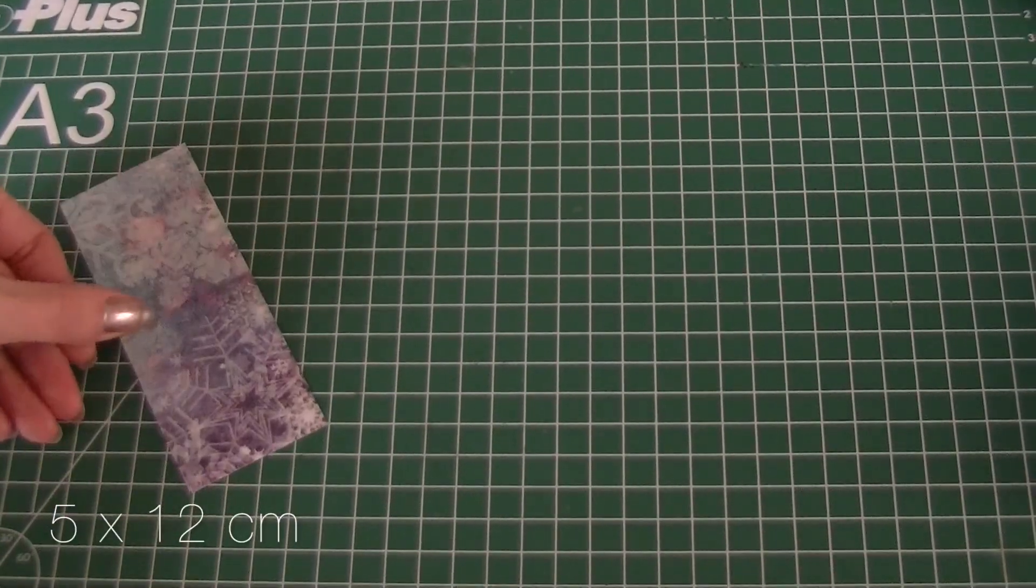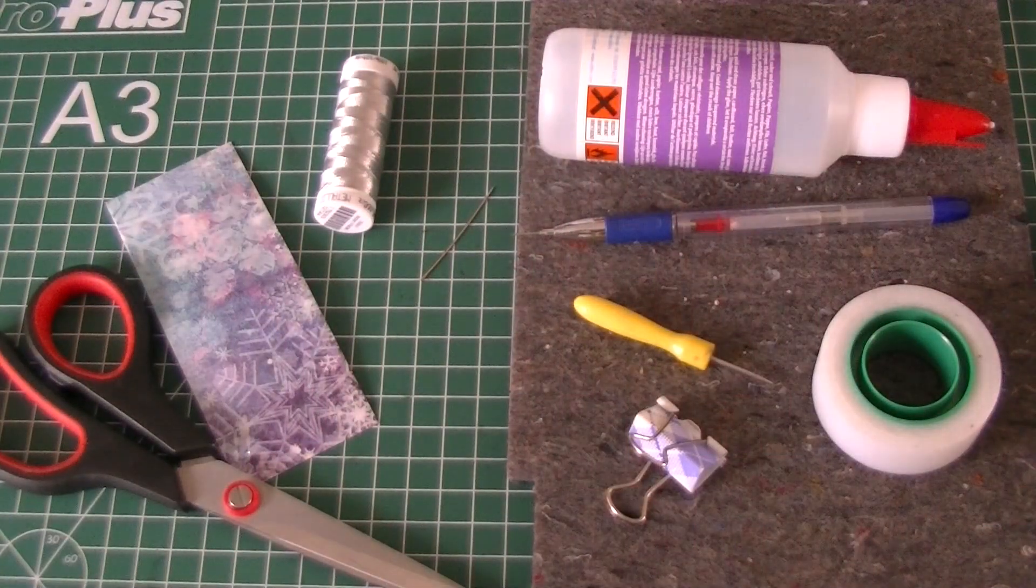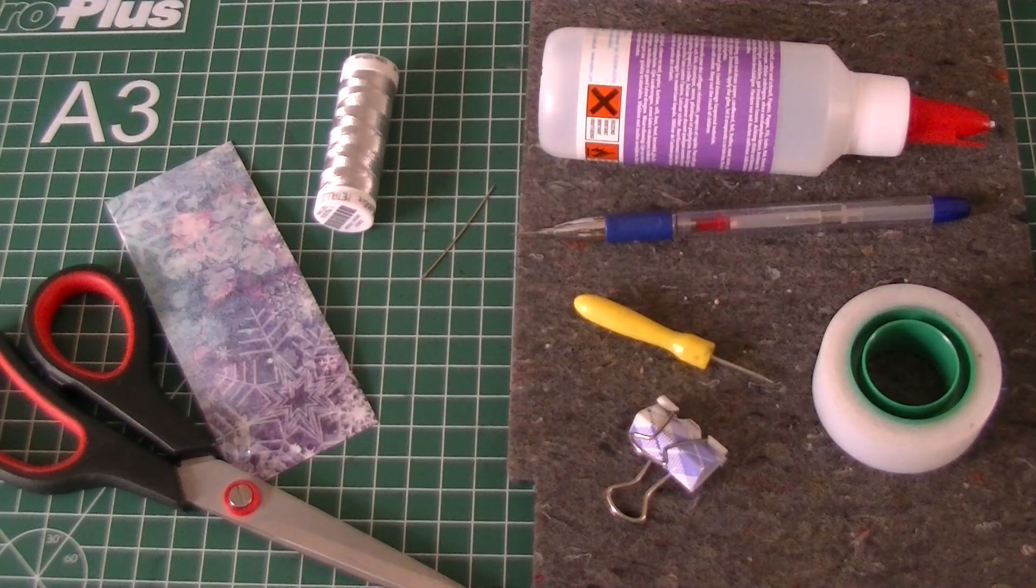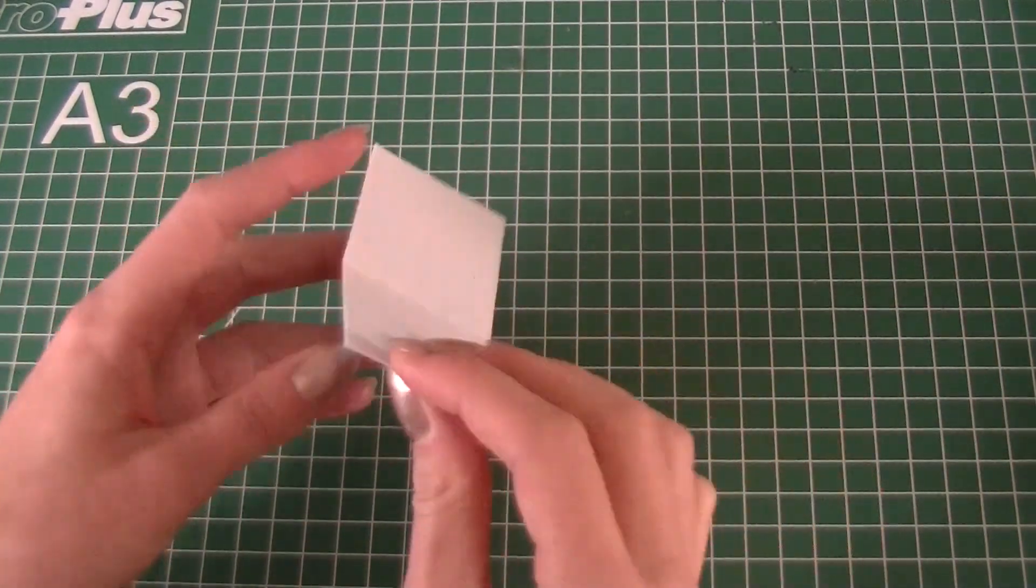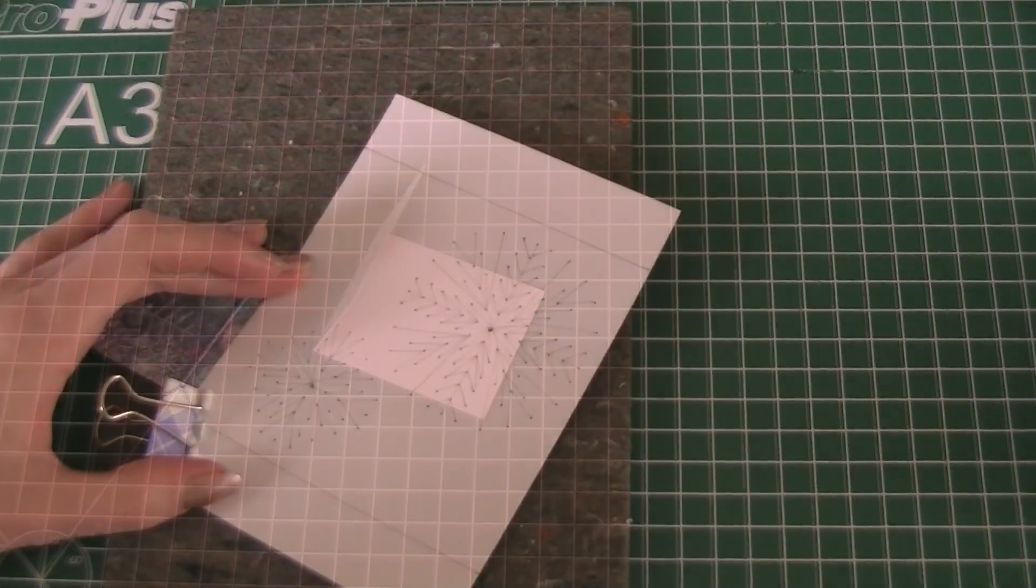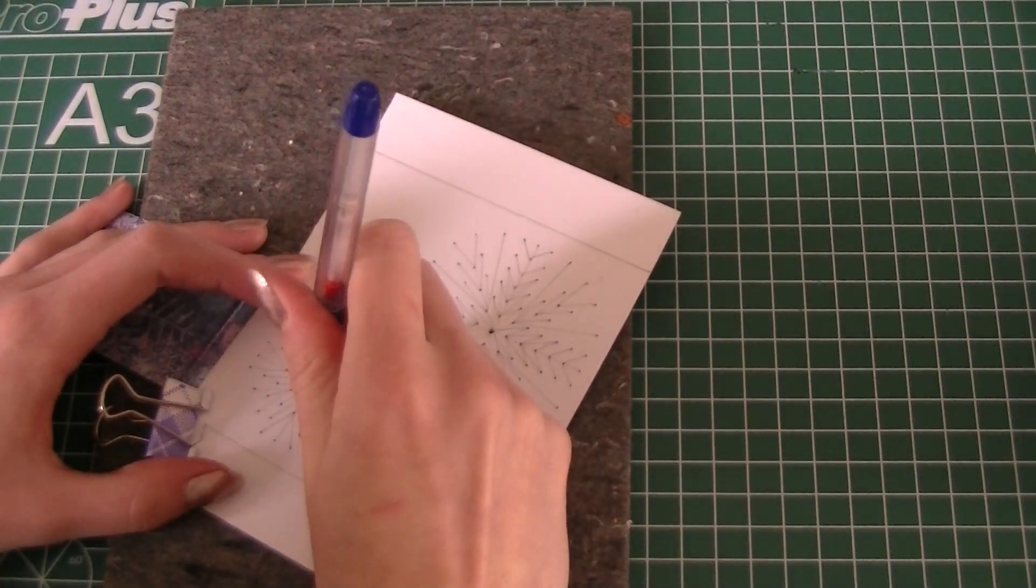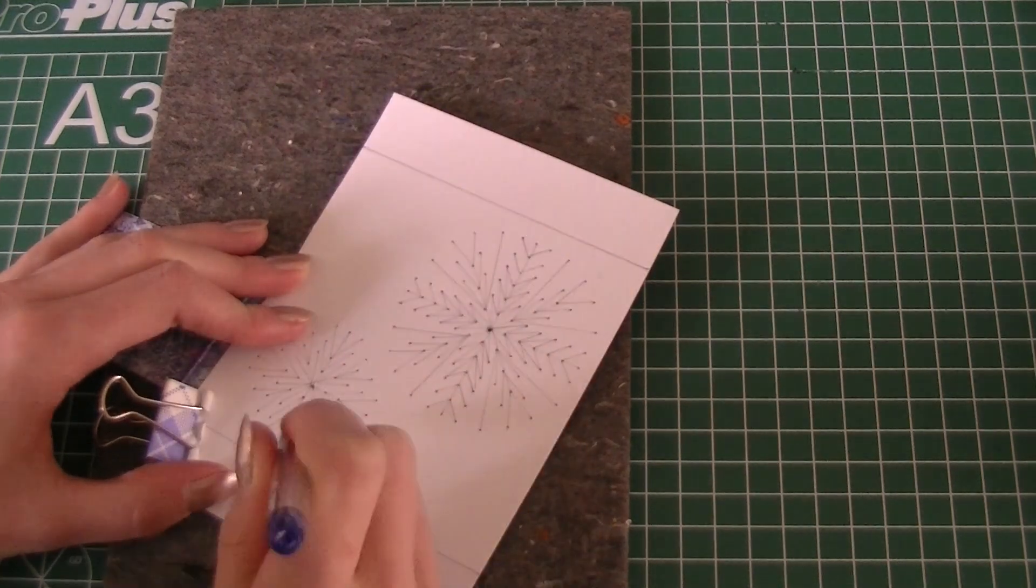You'll need a 5 by 12 centimeter piece of decorative cardboard and the same embroidery supplies as you used for the card. Fold the piece of cardboard in half. Place the template of the small snowflake on top of one half of the cardboard and make the holes.